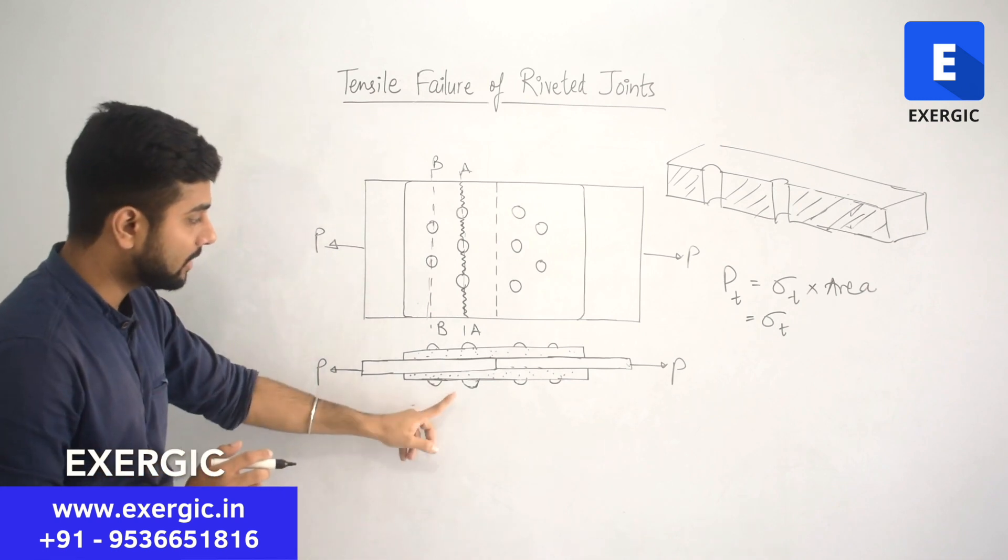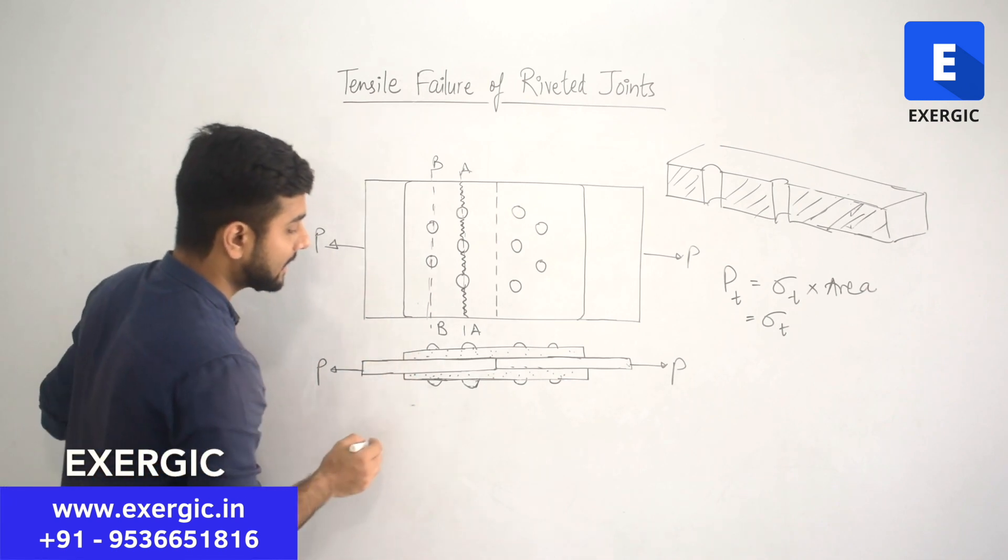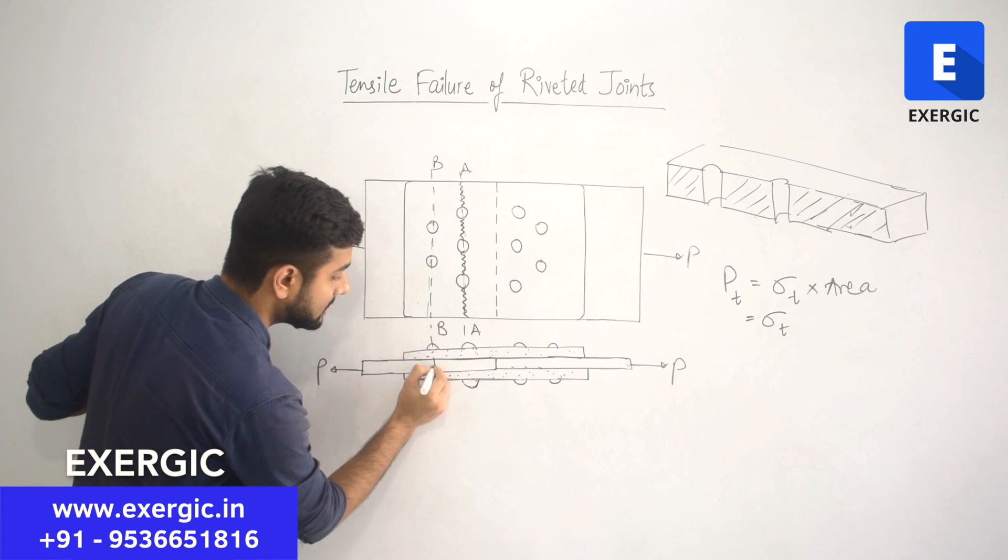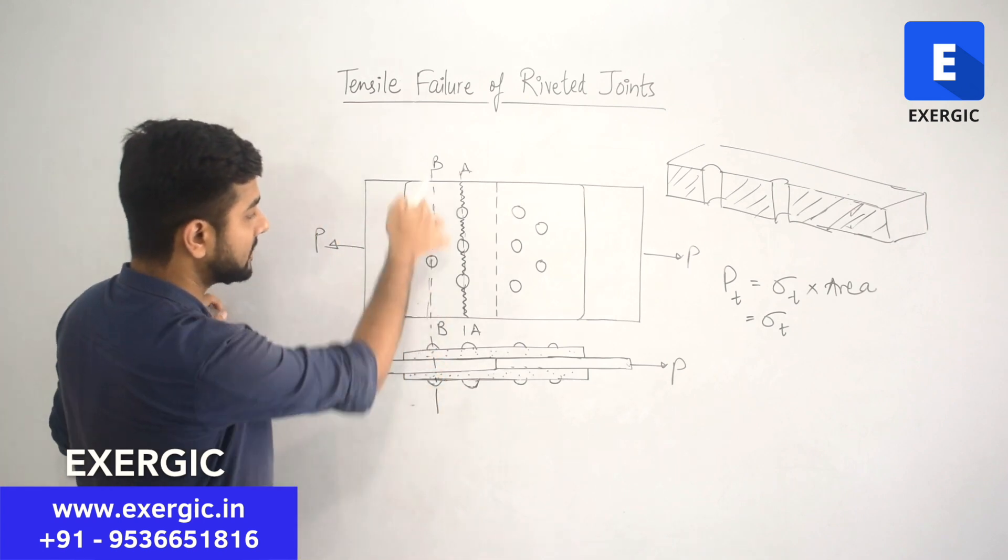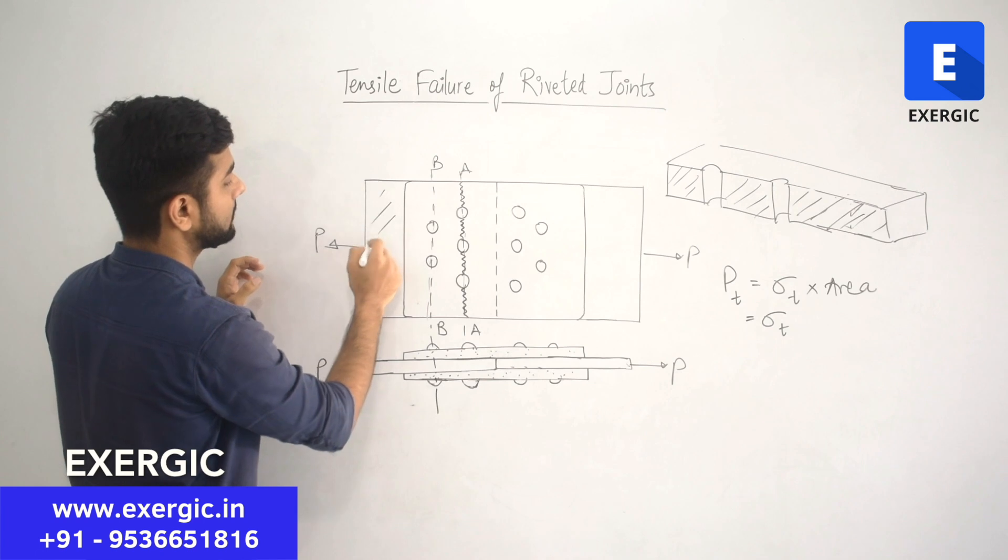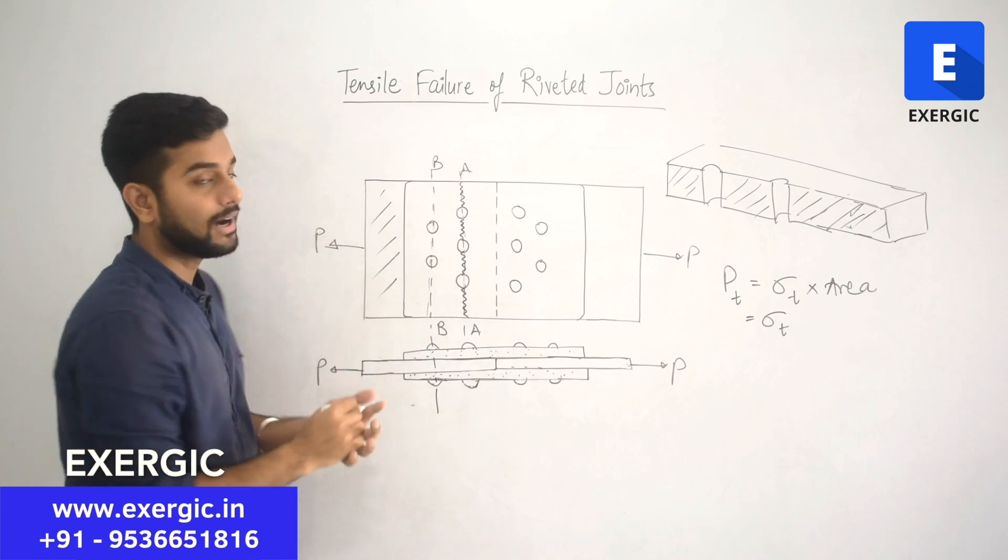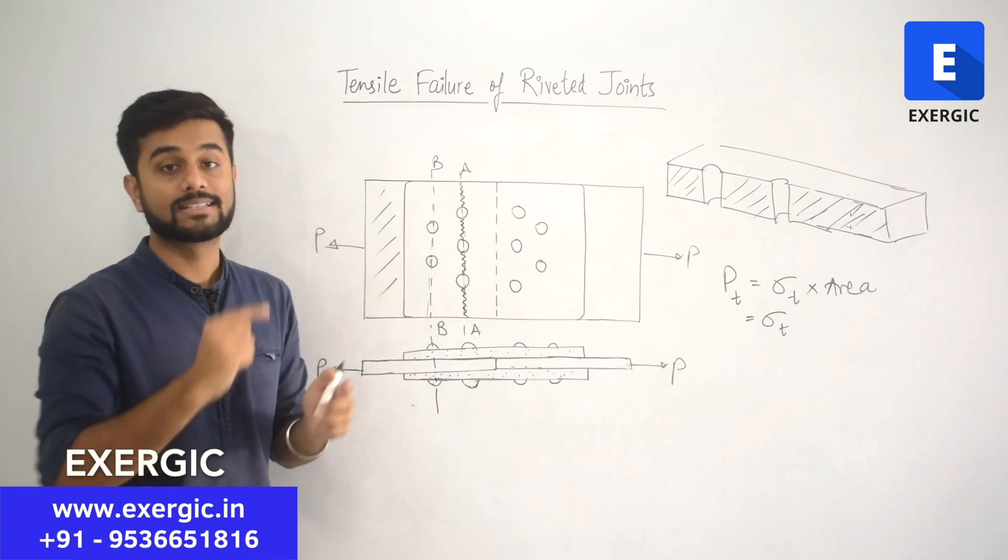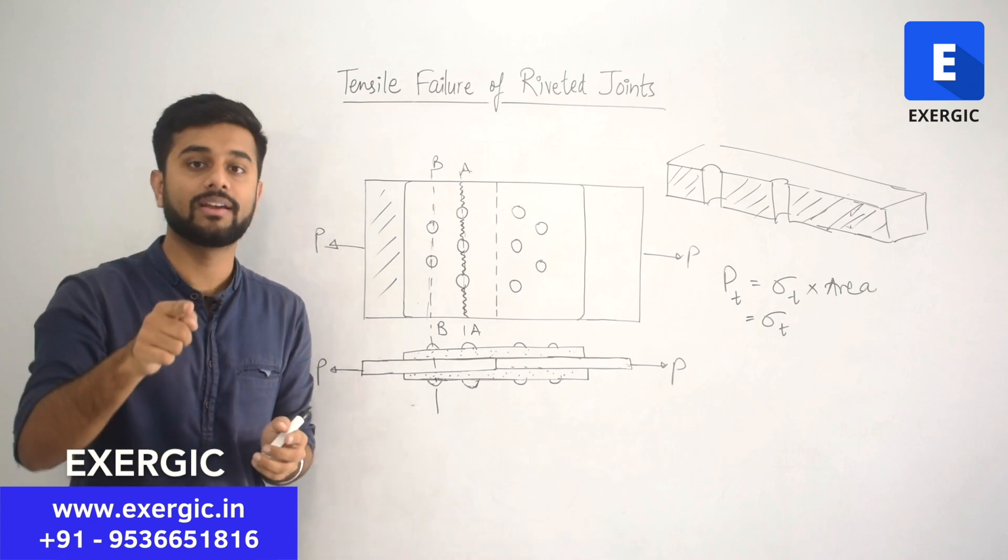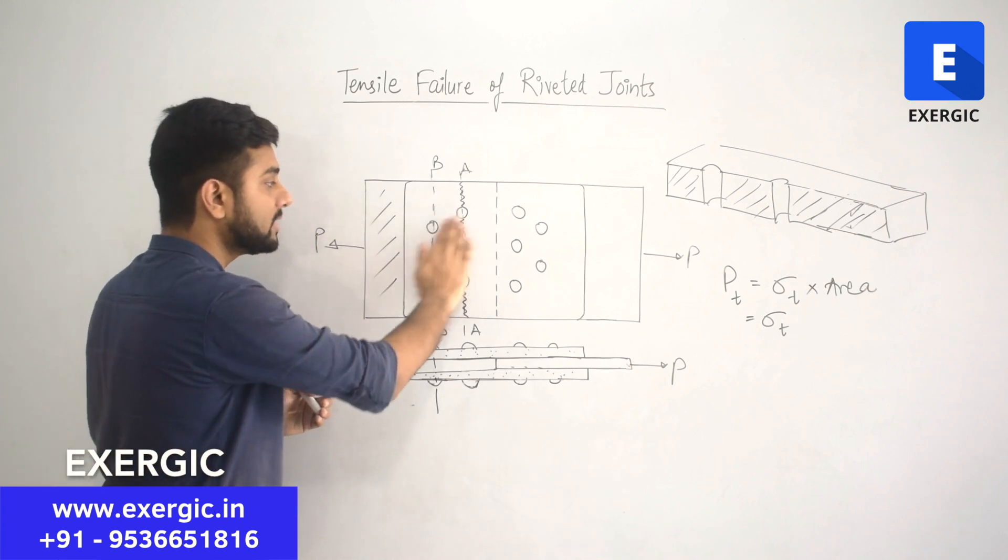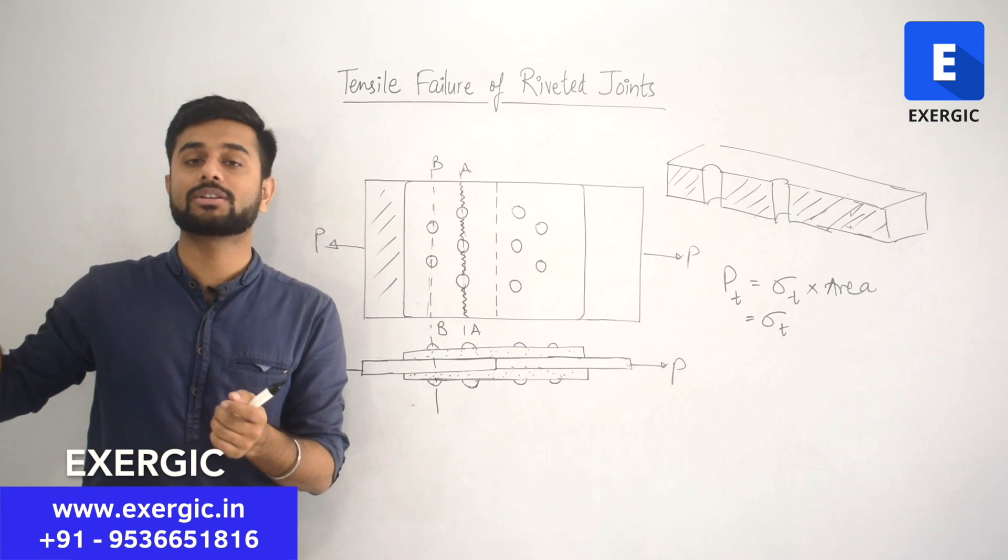Plate has definitely failed but has the joint failed? We are talking about the failure of the joint. Joint has not failed. Look at this diagram here. In this diagram, you can see that this is still holding up. These two rivets are still holding this plate. This is the plate and these two rivets are still holding it. It is different than shear failure. In shear failure, all of them needed to be sheared in order to make sure that the plate fails.